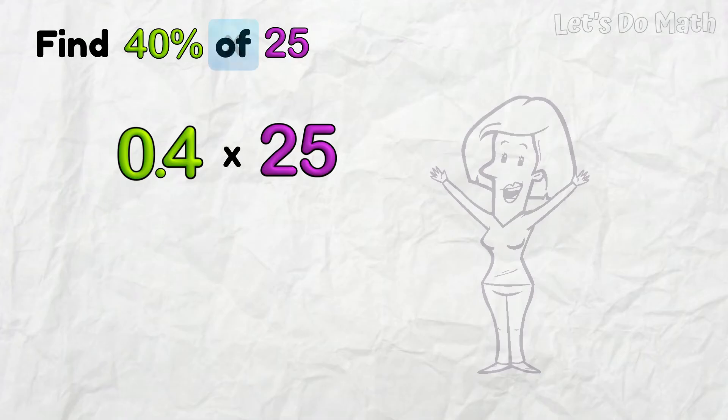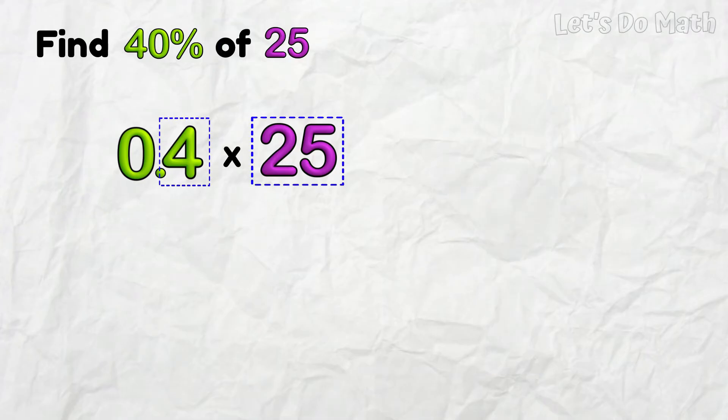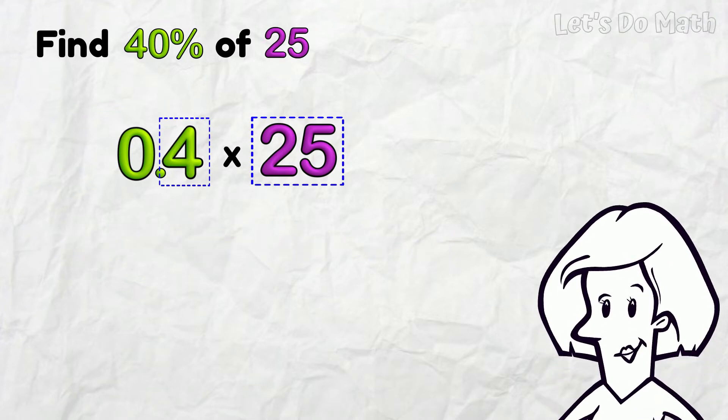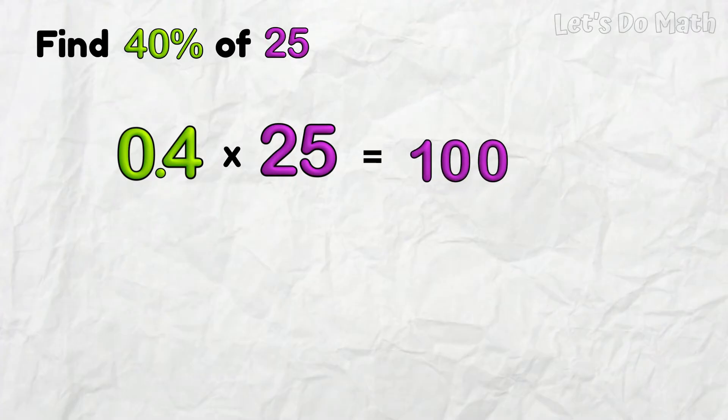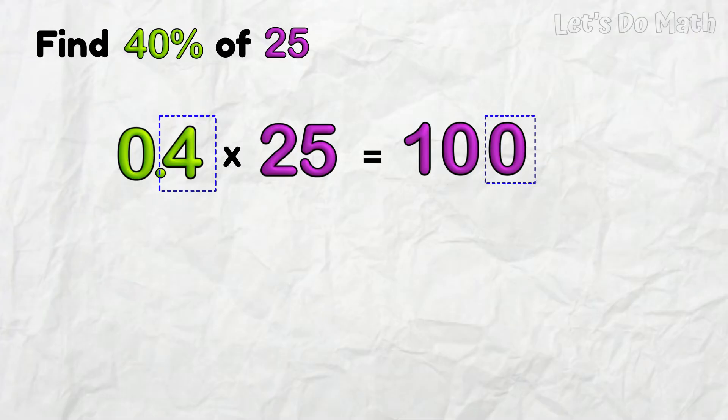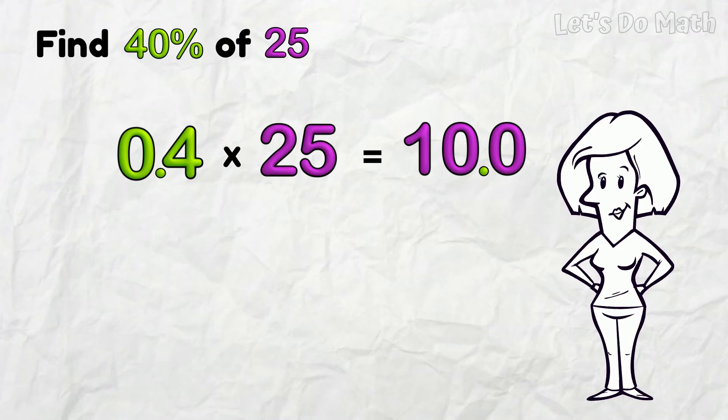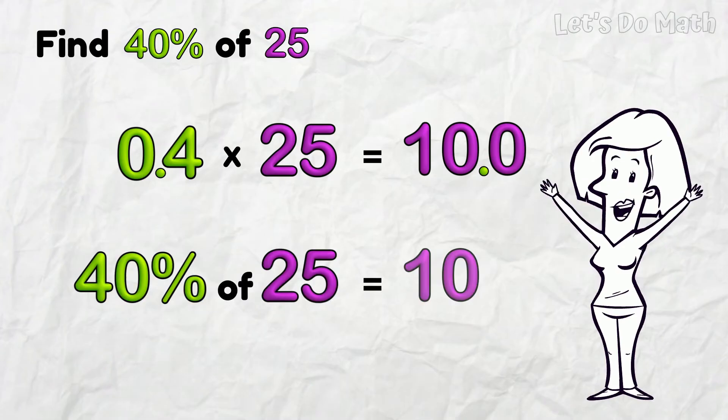These are the figures we multiply, and we put the decimal point in at the end. I could set up a multiplication problem, but we all know that 4 x 25 is 100, so we're nearly there already! Now we just have to put in the decimal point. There's one decimal figure in the problem, so we need one decimal figure in the answer. We just worked out that 40% of 25 is 10!